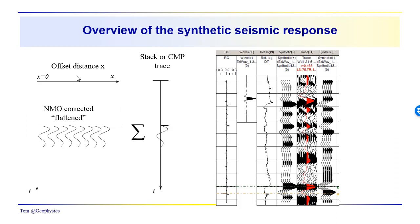As an overview of what we've covered: we reviewed the concept of the common midpoint gather, where we NMO-correct the reflection events at different offsets and sum them together to get a higher signal-to-noise ratio event. Common midpoint stacking does not eliminate all noise, but it's much better than using each individual trace separately. Our stack trace corresponds to the synthetic, or to the noisier actual seismic data. Next time we'll talk about recursive estimation of impedance from the actual seismic data.